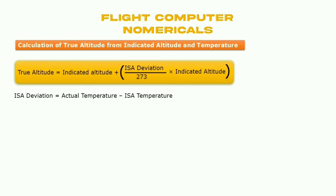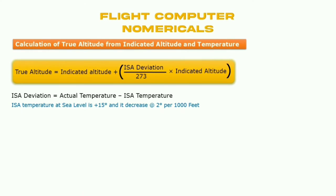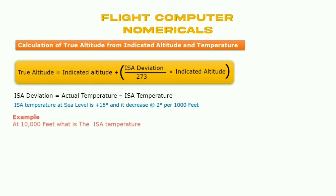ISA deviation equals actual temperature minus ISA temperature. Actual temperature is the temperature when the aircraft is flying at that level. ISA temperature is measured from plus 15 degrees Celsius at sea level decreasing to the altitude where the aircraft is flying — temperature decreases at the rate of 2 degrees Celsius per thousand feet.